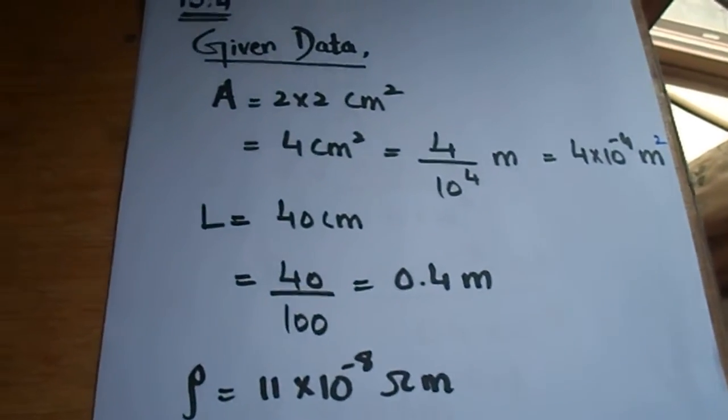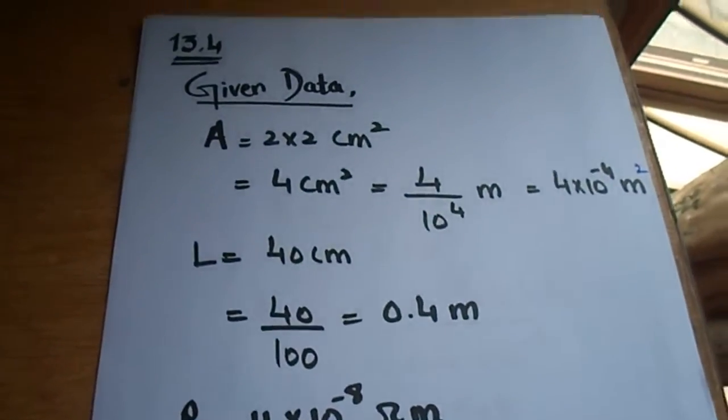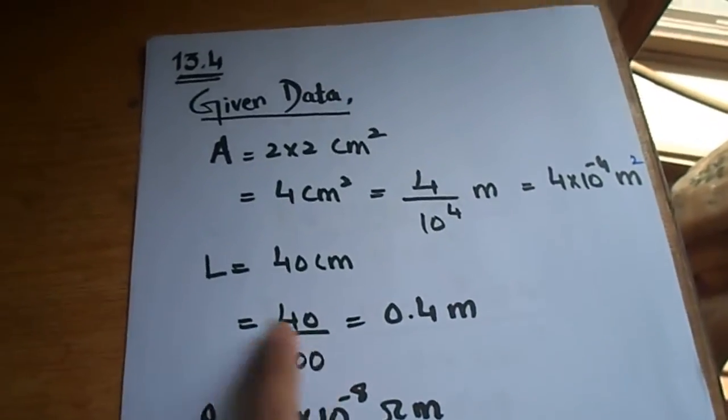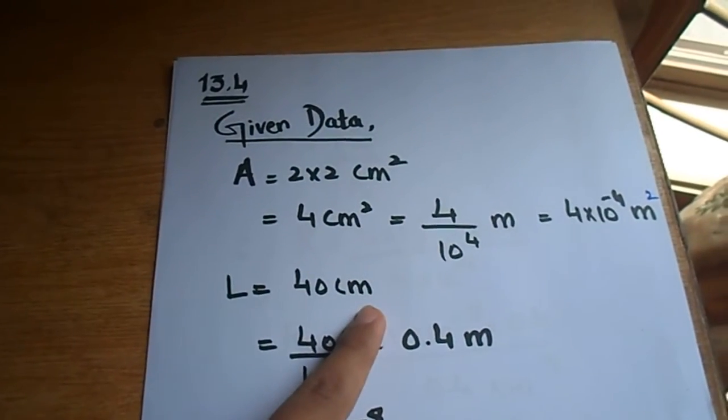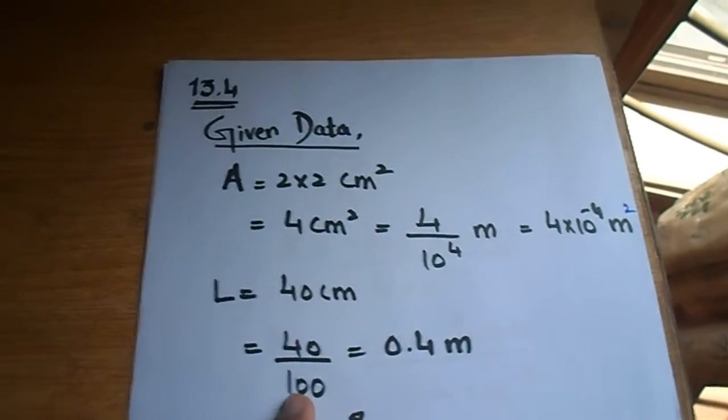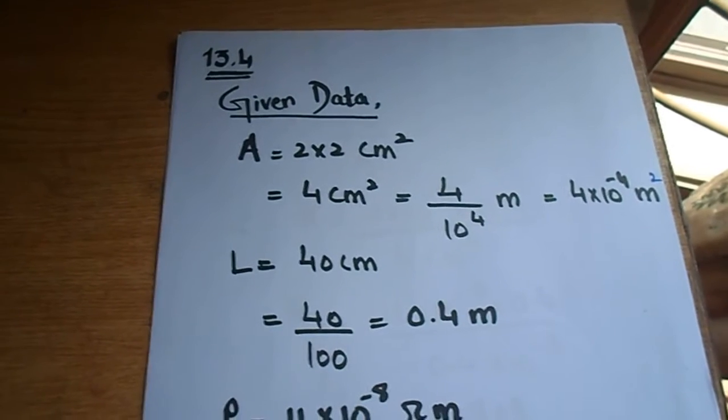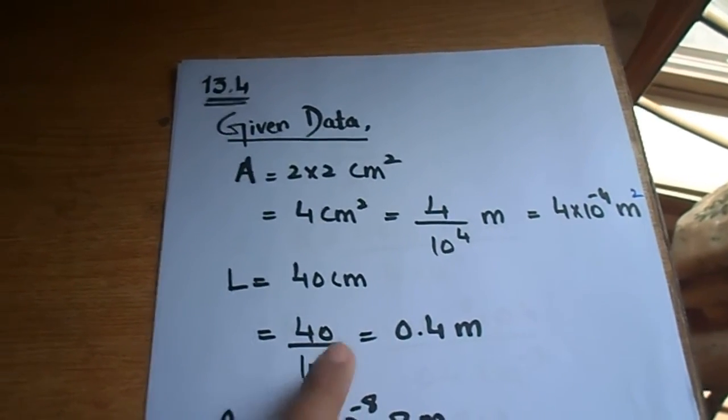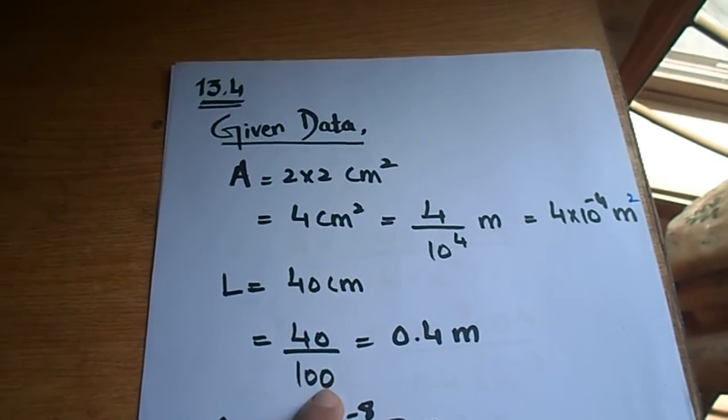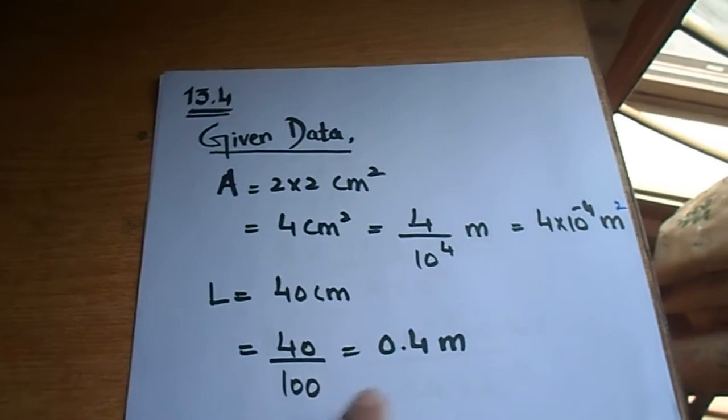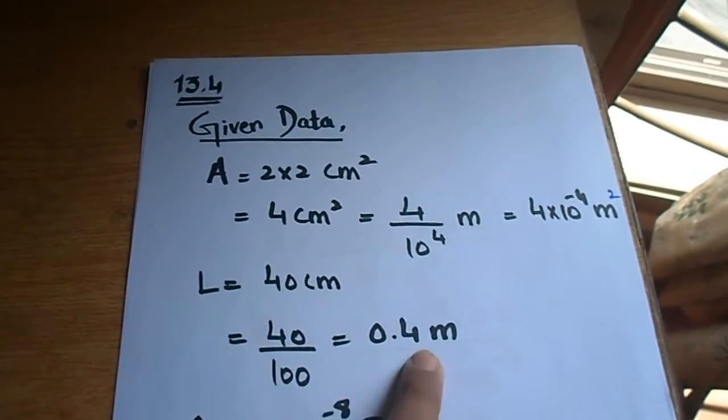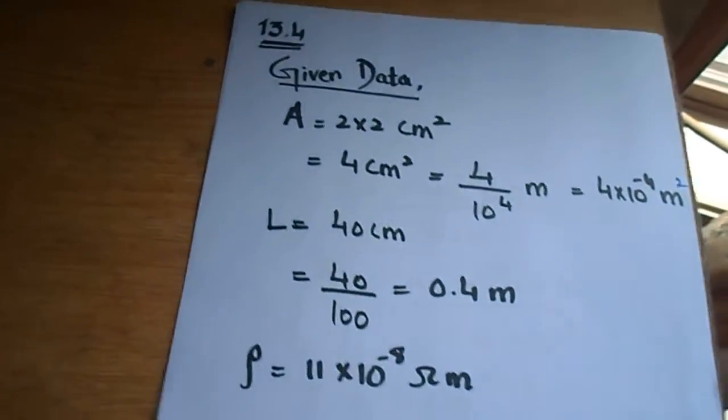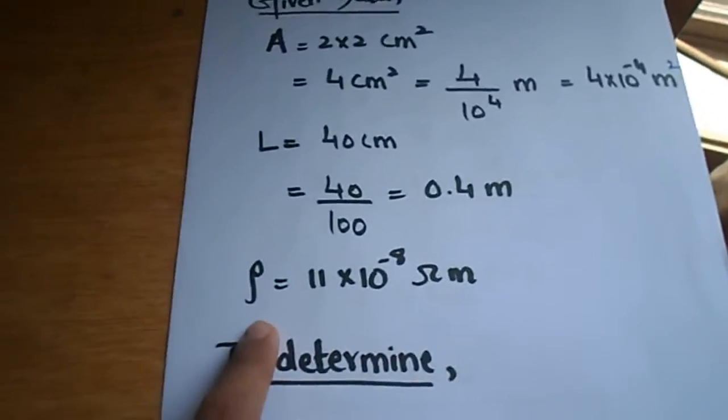We have a length given is 40 cm. Again we have to convert centimeter to meter. Obviously the length is centimeter, not centimeter square, so we need to convert it to meter by dividing by 100. 40 divided by 100, the zeros will cancel, and 4 divided by 10 will be 0.4 meters.